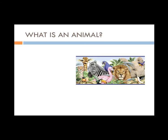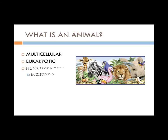Animal life began in the Precambrian Seas. There were multicellular organisms who ate other organisms. An animal is multicellular, eukaryotic, heterotrophic, and most of them use ingestion, which is eating other organisms or eating organic materials.